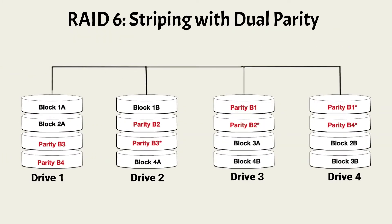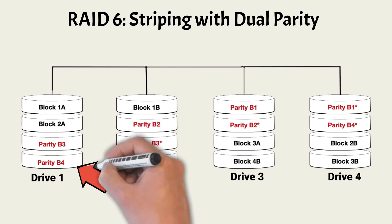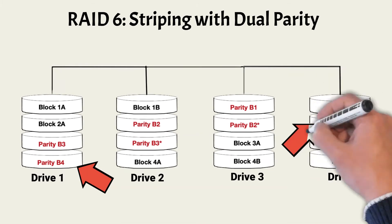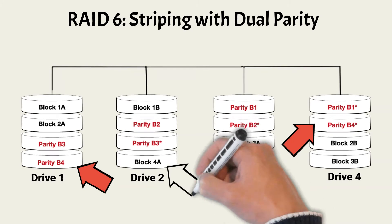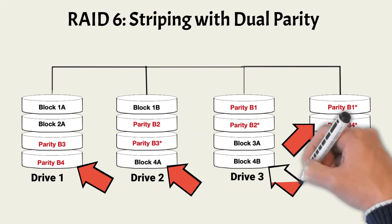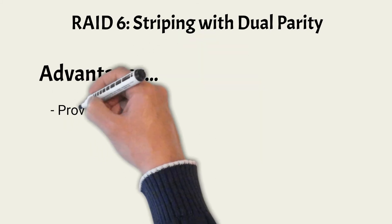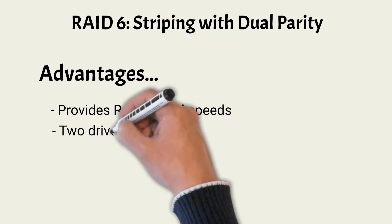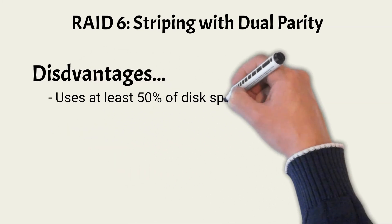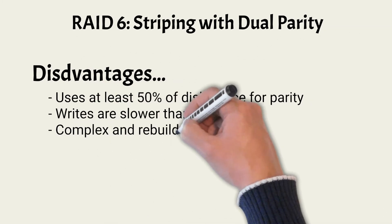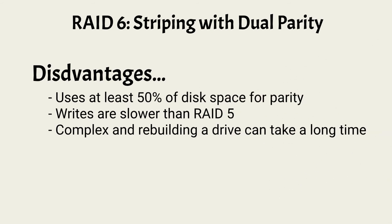RAID 6 is similar to RAID 5. It uses striping and writes parity blocks to protect data. The difference is the second parity write — for each data block written, two parity blocks are also written. Each parity block is written to a separate drive, and neither is written to the same drives as the data. RAID 6 provides the same read speeds as RAID 5, and up to two drives can fail without data loss or interruption to business processes. RAID 6 writes are slower than RAID 5, so if quick storage updates are an issue, RAID 6 might not be the solution you need.